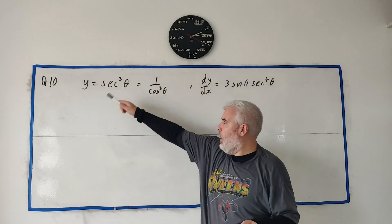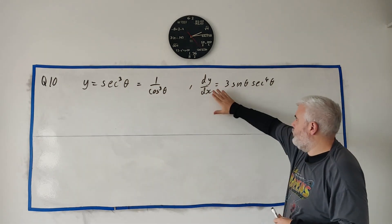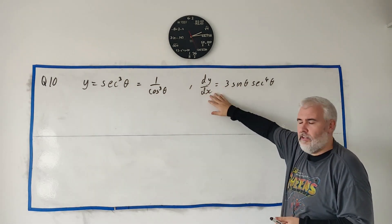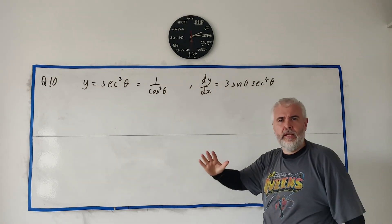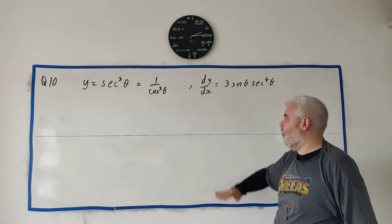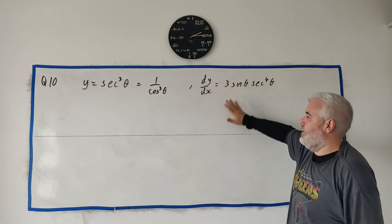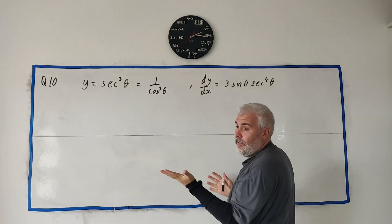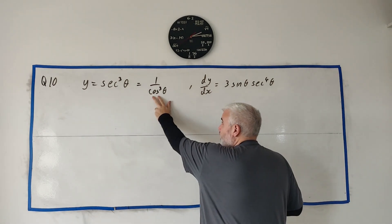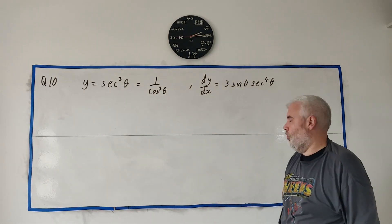In part A, they give us y equals secant cubed theta and want us to find this derivative. They show us the answer because we're going to use this in part B. They remind us that secant is 1 over cosine, so secant cubed is 1 over cosine cubed theta.